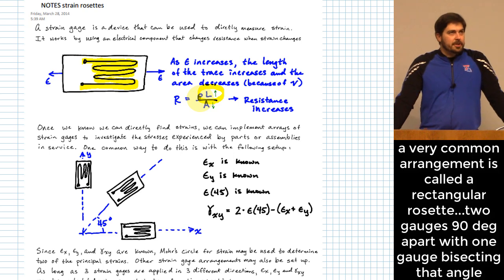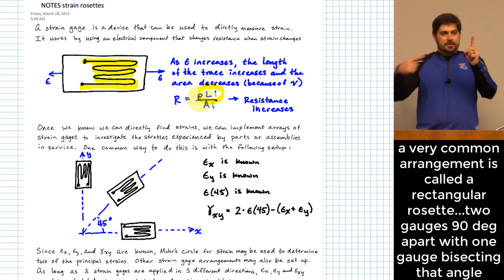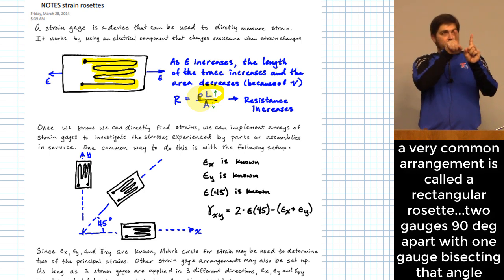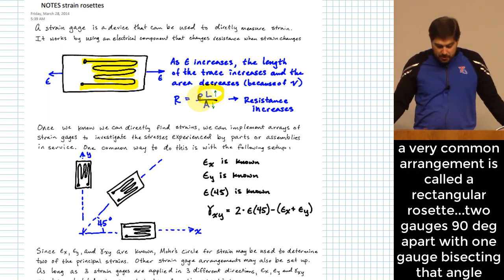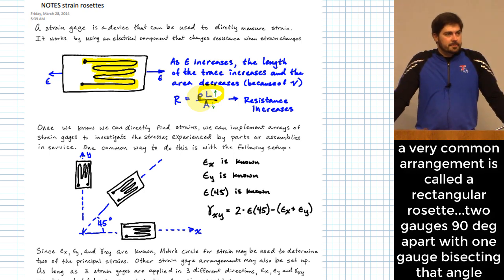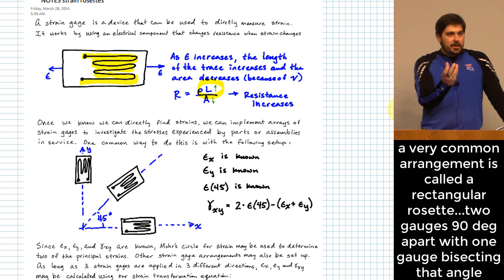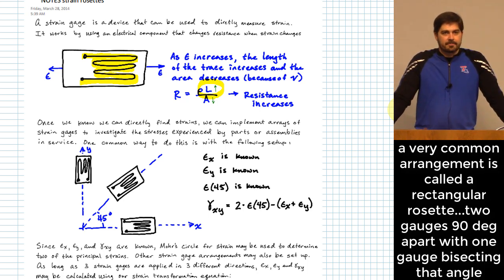A rectangular strain rosette places one strain gauge perpendicular to another (giving x and y directions) and a third at 45 degrees. The combination gives strain in both normal directions and enough information to find the shearing strain, allowing determination of the entire state of stress at that location. This information can be programmed into a system like an Arduino to report the exact state of stress.